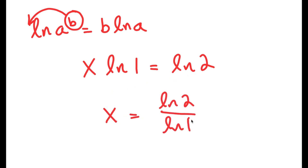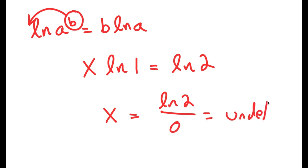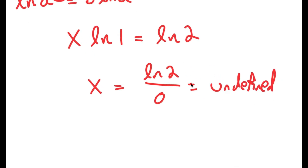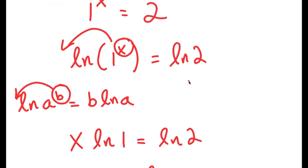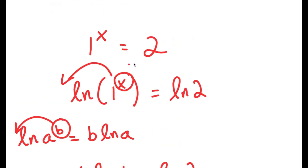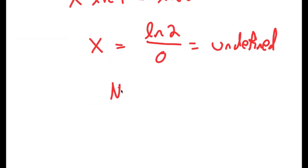However, the problem with this is that ln(1) is equal to 0. And remember, anything divided by 0 is undefined. So if we tried to divide both sides by ln(1), we would get ln(2) over 0, which is undefined. So we know that this equation has no real solution.